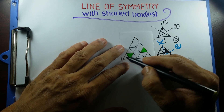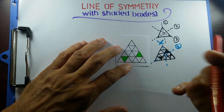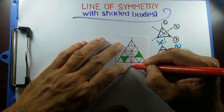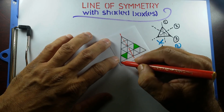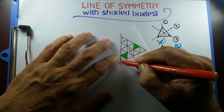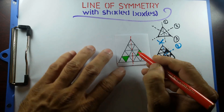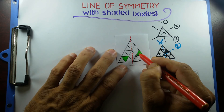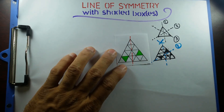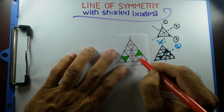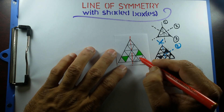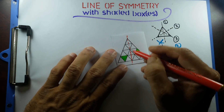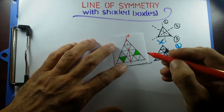There are three lines I can draw. One is through this vertex to the opposite side, and another one — see, the same thing — if I fold it through here, this box will fall in this one. This is shaded, this is not shaded, so this is not a line of symmetry. And this one is also going to coincide with a non-shaded triangle, so this line of symmetry is not going to work for us.